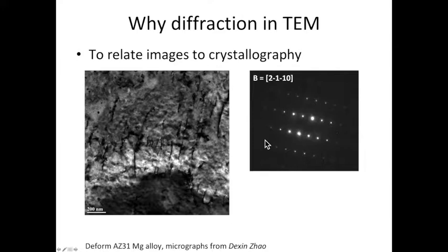Using the diffraction pattern, we can answer many questions. For example, whether the specimen is crystalline or amorphous. In this case, we know it's not amorphous because if it was amorphous, then we should have seen a diffusive ring instead of sharp spots.